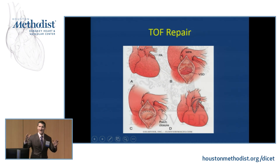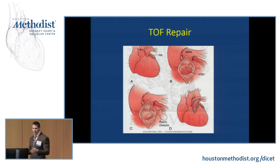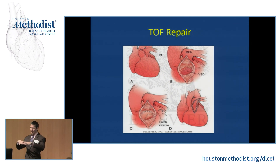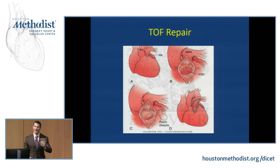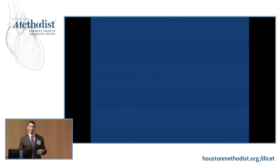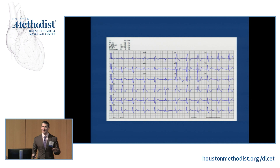This augments the size and relieves the obstruction. But as you can imagine, if you have three leaflets of a pulmonary valve that all coapt in the middle, and you open up the annulus and put a patch on a portion of it, those leaflets don't coapt so well anymore. As a result, something like 99% of patients we see in the adult world who were born with Tetralogy of Fallot have had a repair, and the majority of patients we see have severe pulmonary insufficiency as a result.